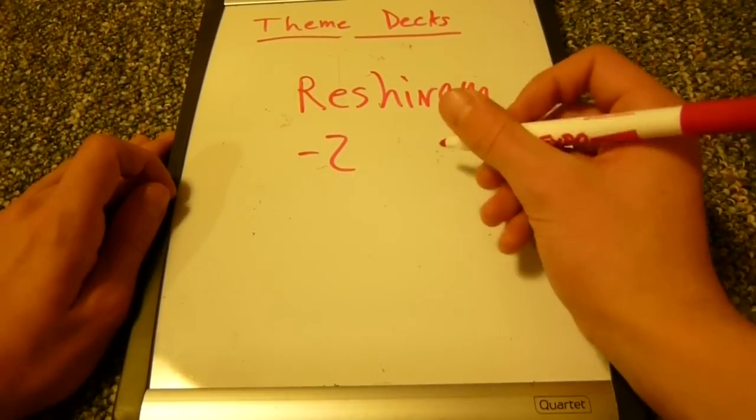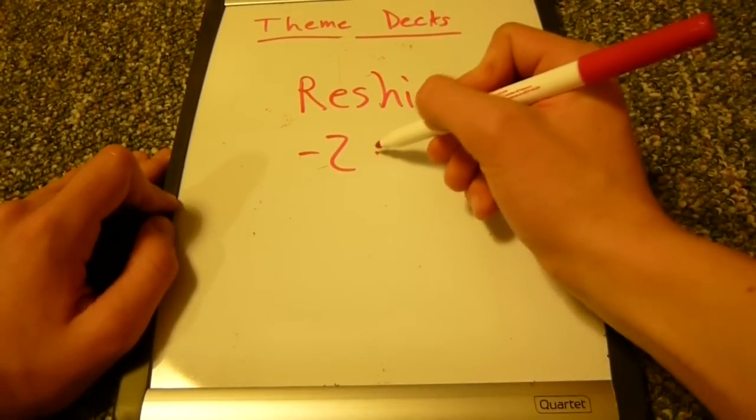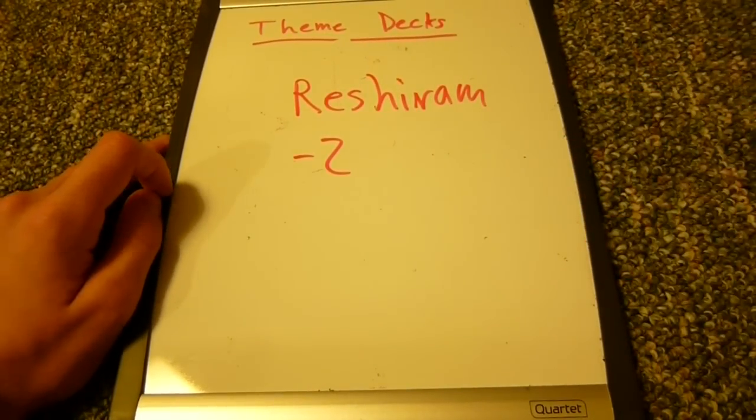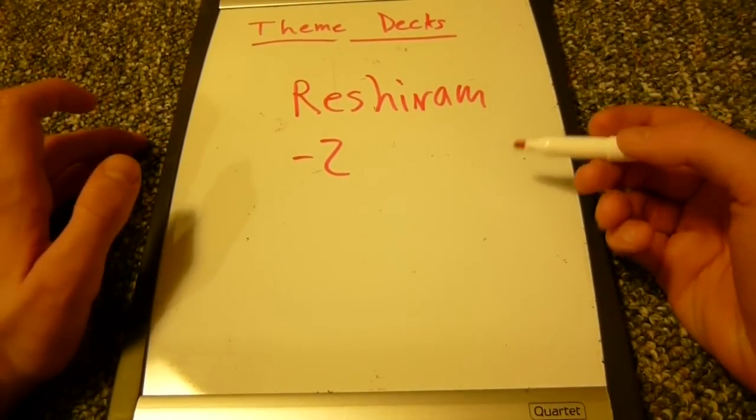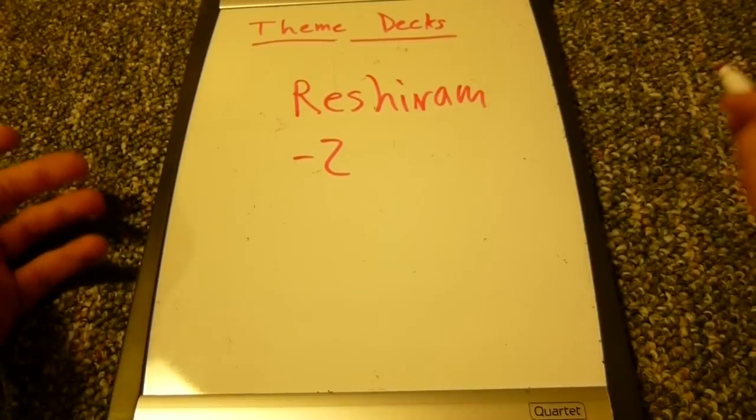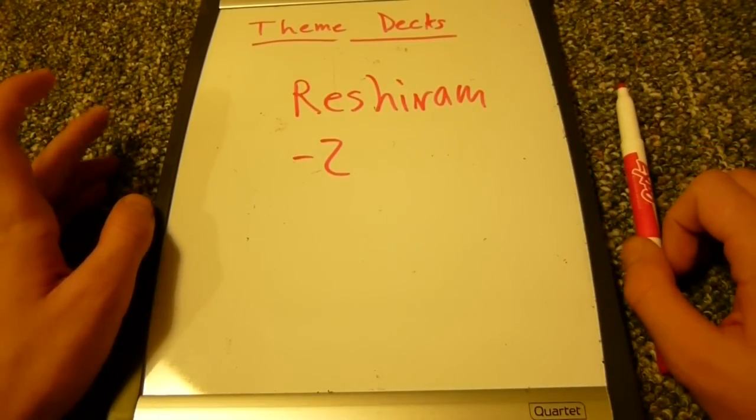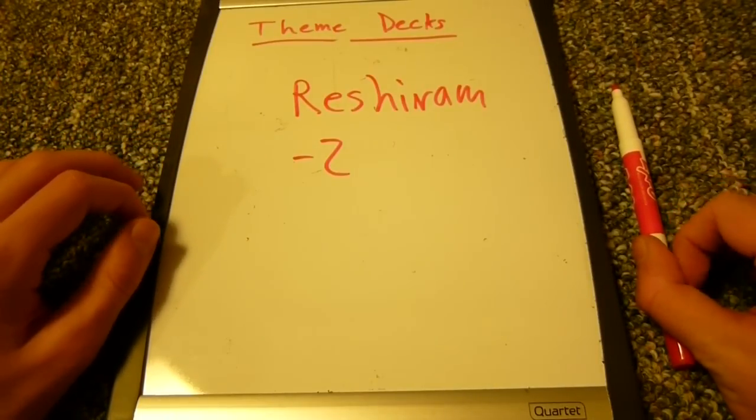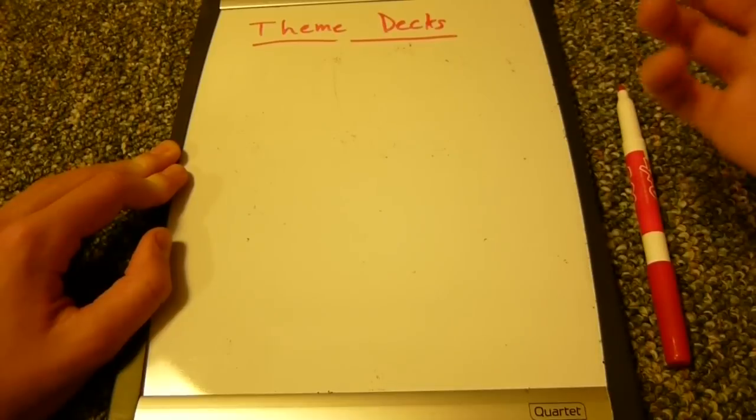Now, Typhlosion can take one fire energy from the discard pile and reattach it to a Pokemon with the penalty of one damage counter. Emboar can attach as many fire energy per turn as it wants to any Pokemon from the hand. And this attack does 120 damage. This is a lot of damage. What Typhlosion or Emboar allow you to do is use this attack every single turn. And that's what the strategy of the deck is. It's basically just set up and then deal damage consistently and quickly over and over.